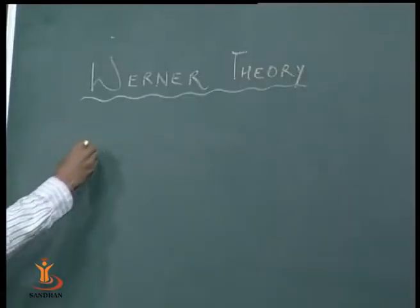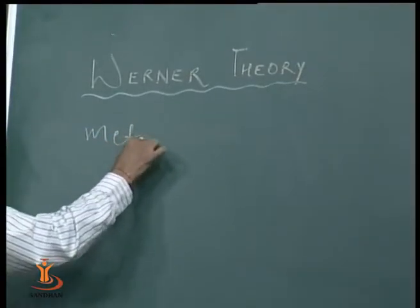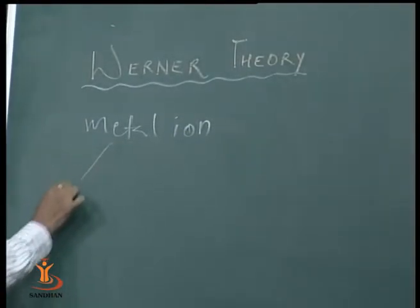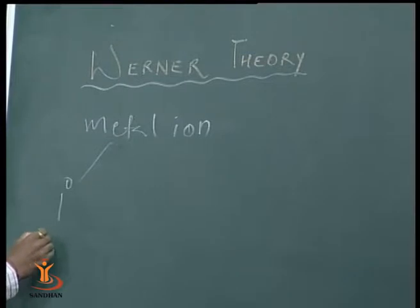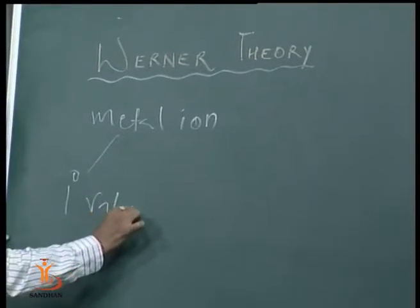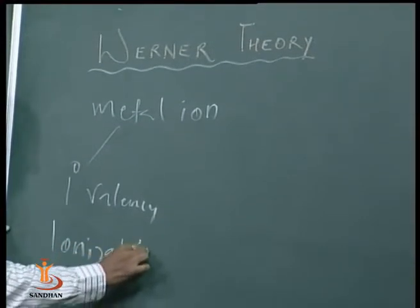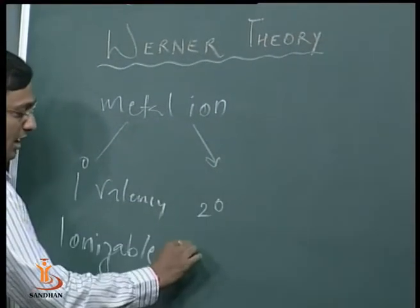Good afternoon students. Today our topic is coordination chemistry, or complex compounds. First, we discuss a few points of Werner theory given by scientist Alfred Werner. According to Werner, a metal ion has two types of valency: one is primary valency, also called ionizable valency, and second is secondary valency, also called non-ionizable valency.